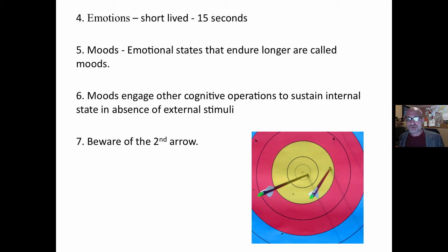Moods are emotional states that endure longer than 15 seconds. To have a mood, you have to dwell on it. You have to engage other cognitive operations to sustain this state in the absence of external stimuli. You're angry, then anger leaves. But you think about it, engaging cognitive operations, and you continue to be angry or sad or disgusted.